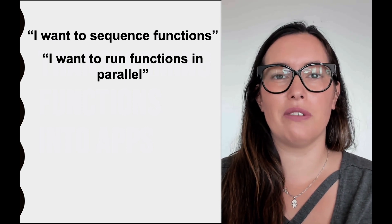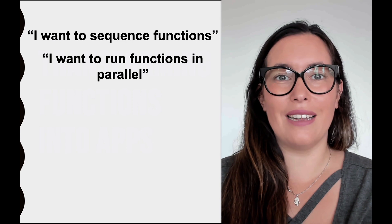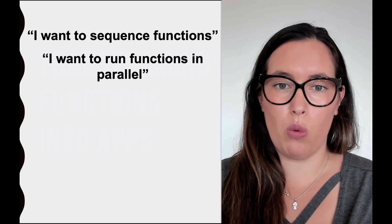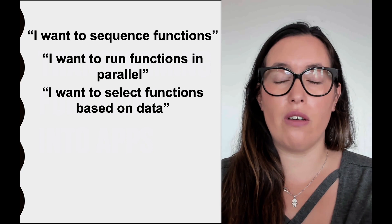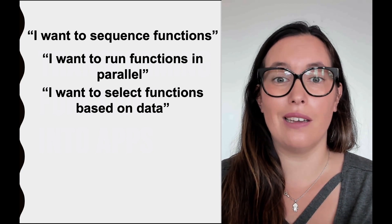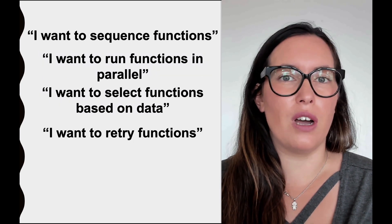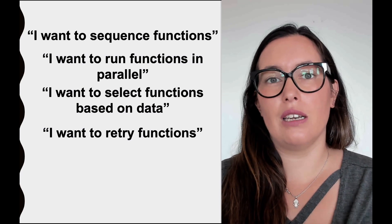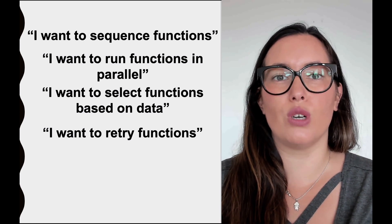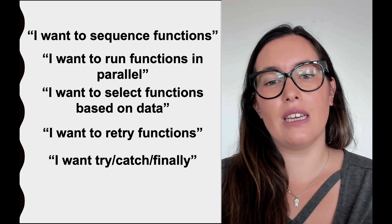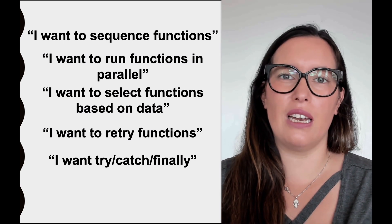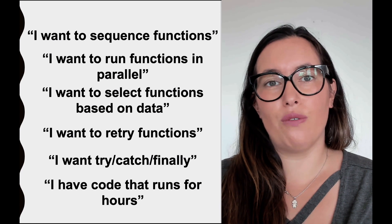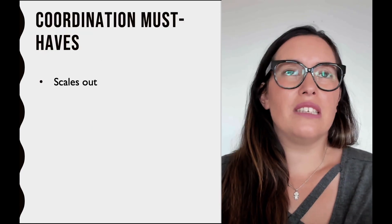More complex scenarios include running functions in parallel — embracing the event-driven state by running functions in parallel and then bringing everything into one result — or running one function or another depending on particular data, doing conditionals in a straightforward way. How do you retry functions? How do you make sure that a function calling a third party keeps retrying? If you want to implement something like try-catch-finally with functions, it's kind of hard and you need to embed that inside your function's code. And if you have a workflow that runs for hours, Lambda functions only run for 15 minutes — so how do you do that?